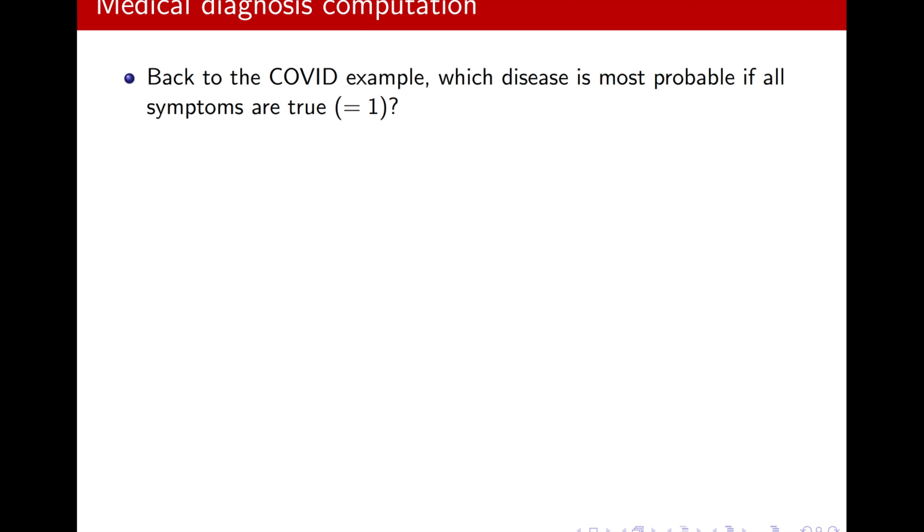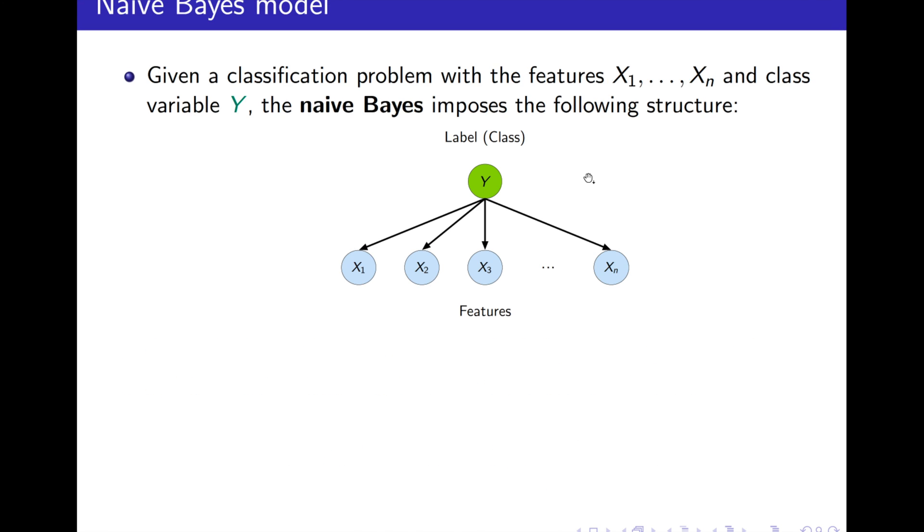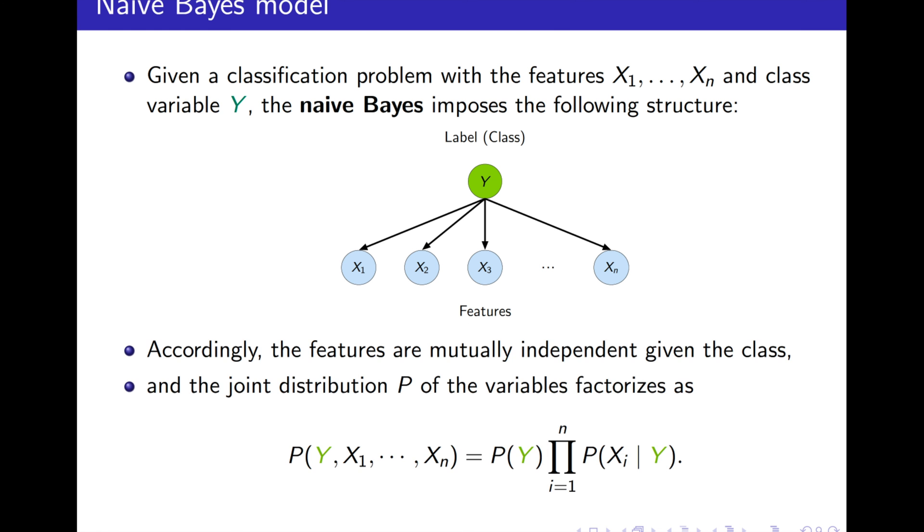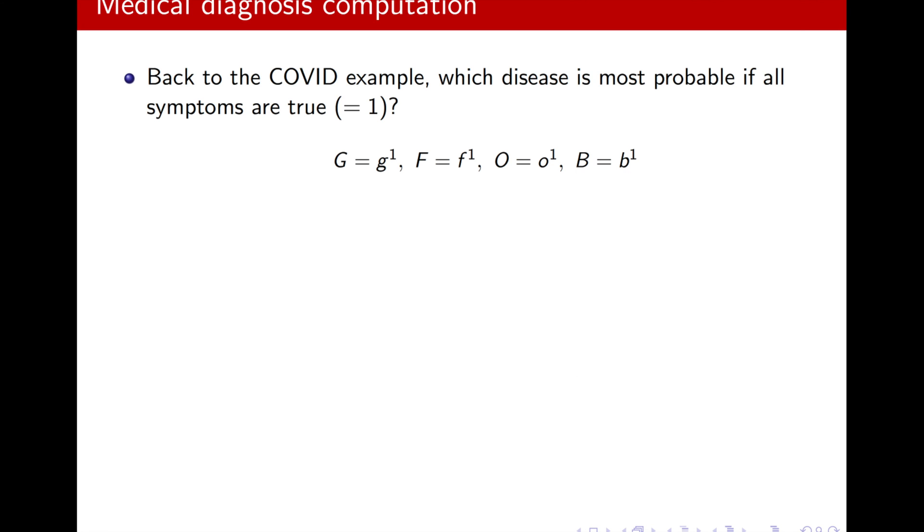Okay, so, back to our question. We want to determine which disease is more likely if, for example, all the symptoms are true. Okay, so, congestion, fever, coughing, and all the other ones here that will list that difficulty breathing, they all are true. Now, we want to determine the most likely disease that the person has.